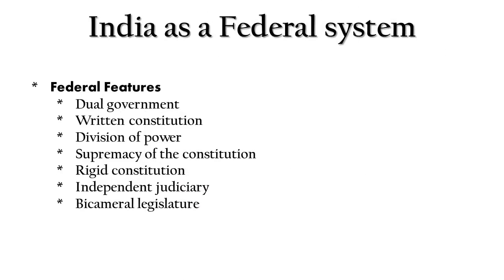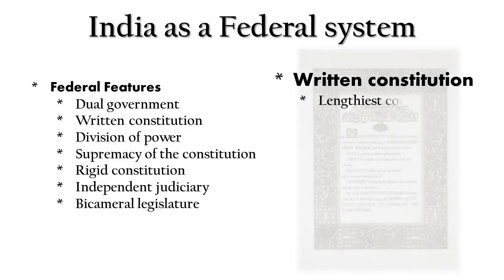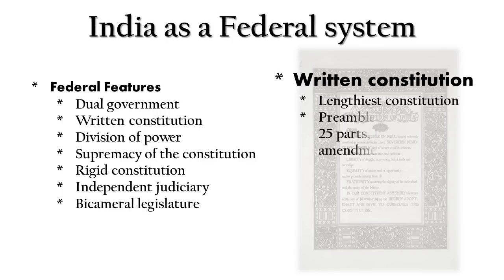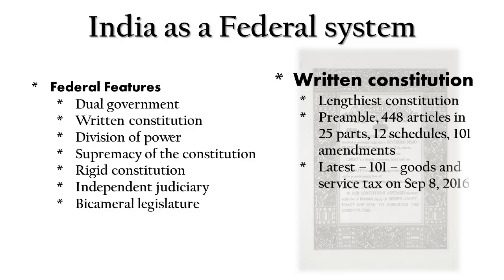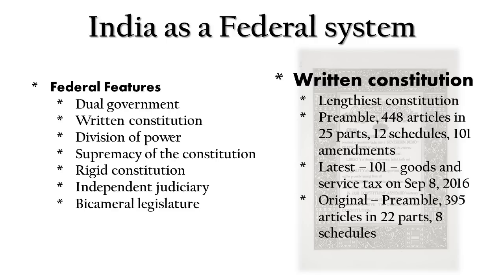The constitution of India is a written one and also the lengthiest constitution in the world. It contains a preamble and 448 articles, divided into 25 parts, 12 schedules, and 101 amendments — the 101st amendment being the introduction of Goods and Services Tax on September 8, 2016. Originally, during the time of formation, the constitution contained a preamble, 395 articles in 22 parts, and 8 schedules.